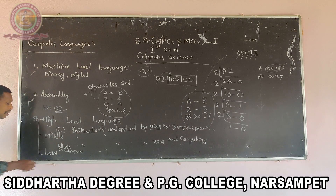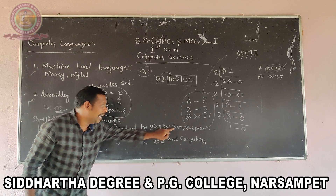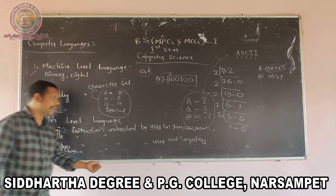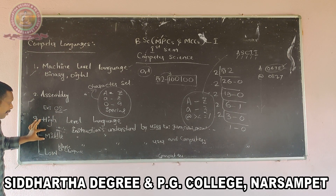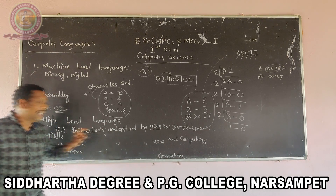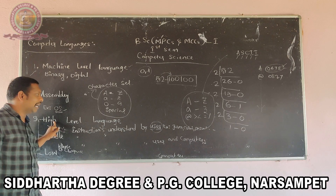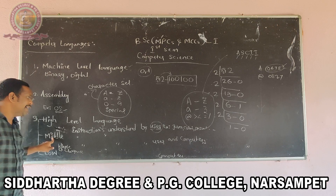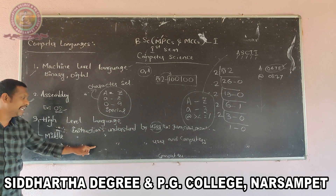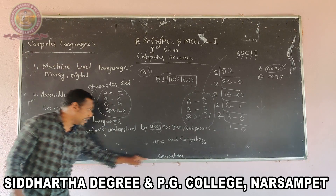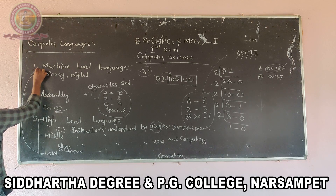C language is an example of middle level language. Low level language means instructions that are understandable only by the computer. The computer can understand only one language — machine level language — also called binary language, digital language, and low level language. So high level language is divided into middle level language and low level language.